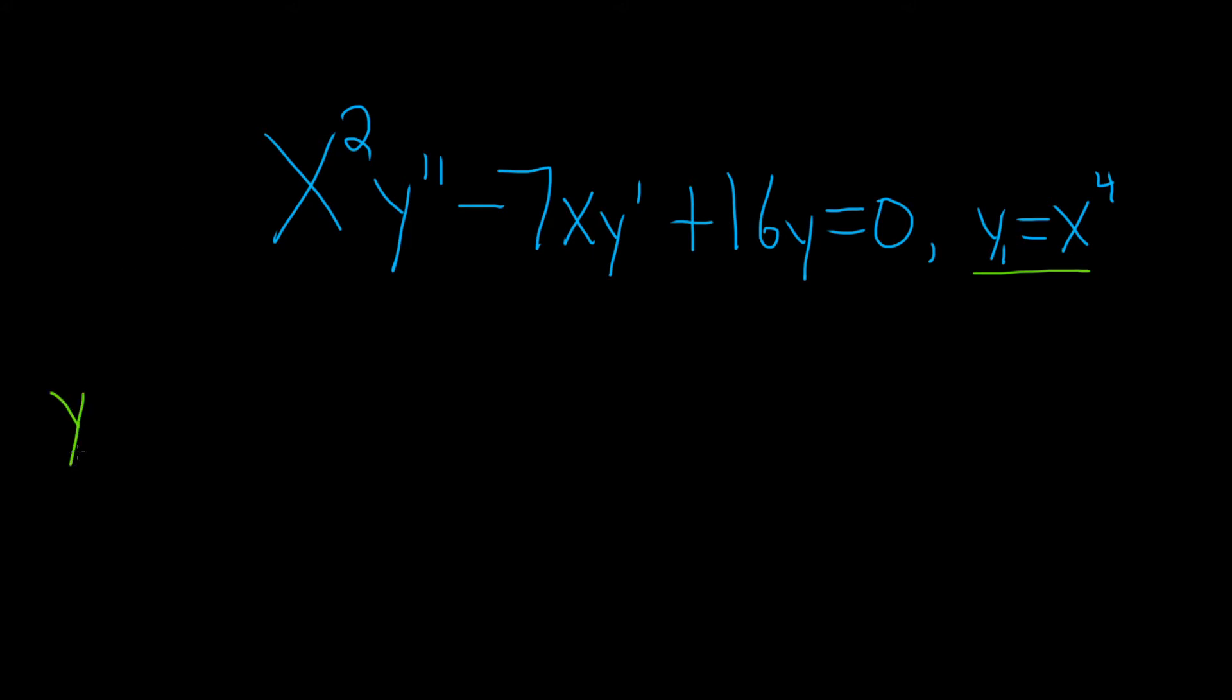So the formula is y₂ equals y₁ of x times the indefinite integral, and it's a fraction. In the numerator, we have e to the minus integral of big P of x dx, and in the denominator, we simply have y₁ of x, and it's being squared like this, dx.